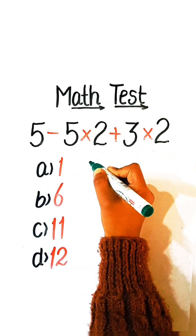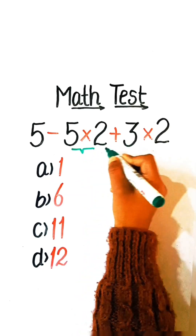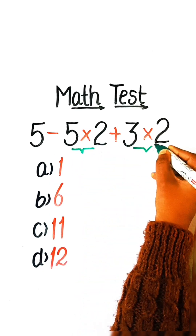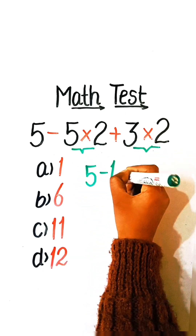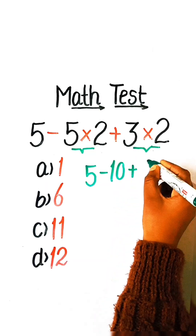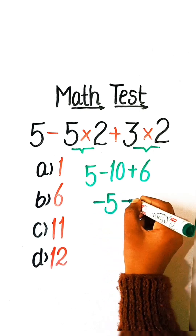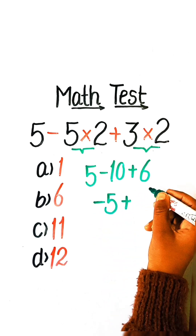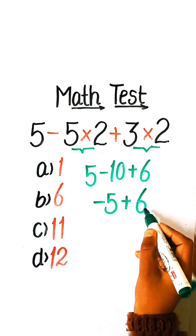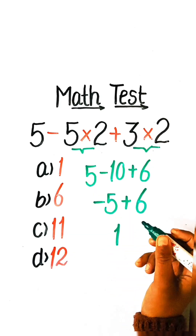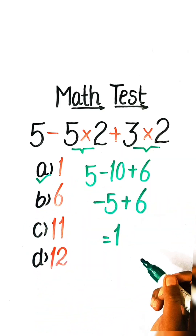So let's solve this. We have to solve the multiplication part first. So we will write: 5 minus 10 plus 6. 5 minus 10 is minus 5, plus 6. Minus 5 plus 6 equals 1. So Option A, 1, will be the correct answer.